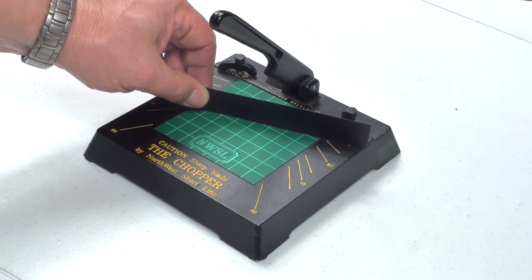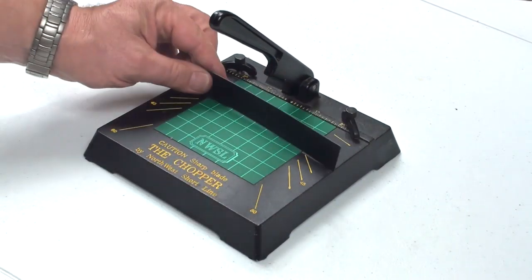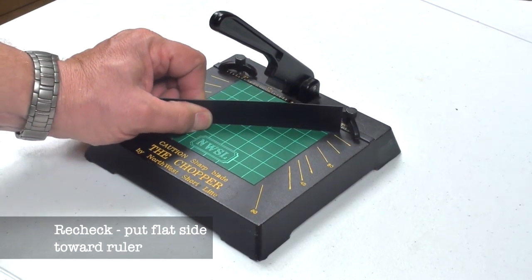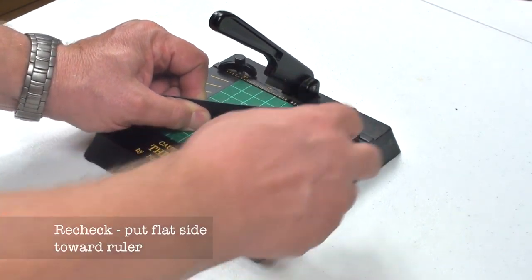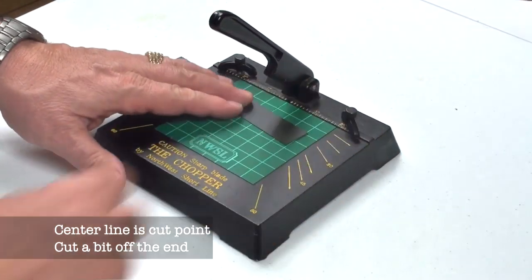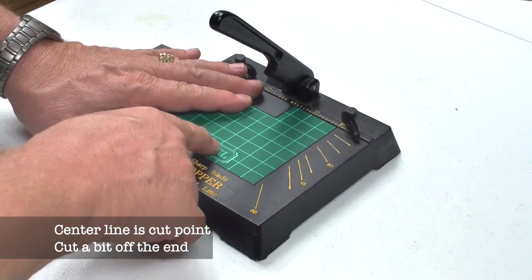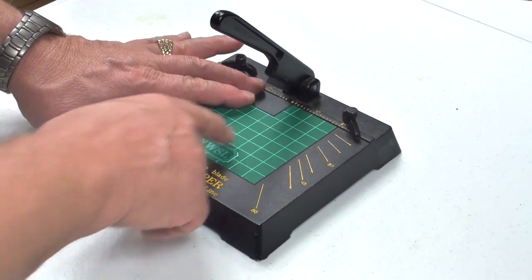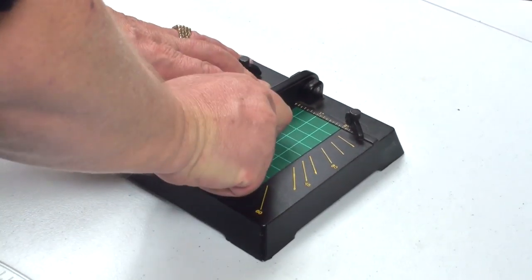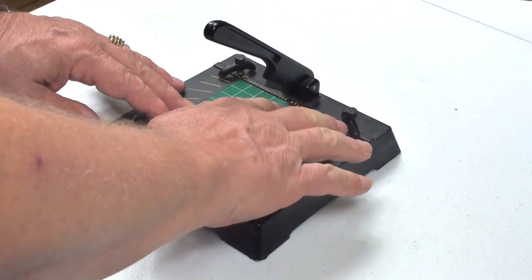Now on the chopper I'm going to re-identify which edge is square, put the square edge against the edge, and cut just a little bit off the end so that I know that I've got a square cut there.